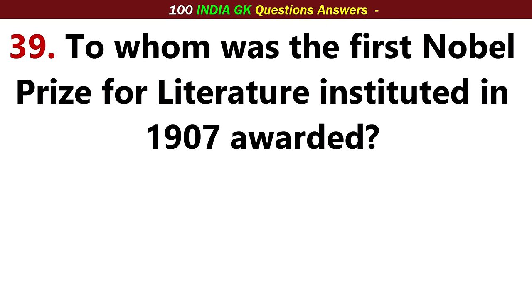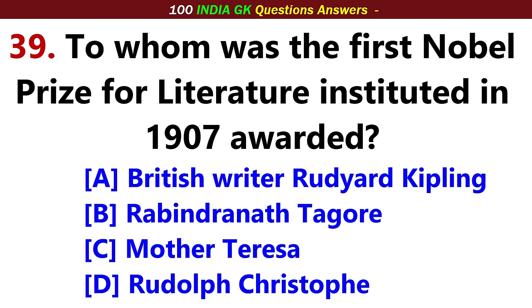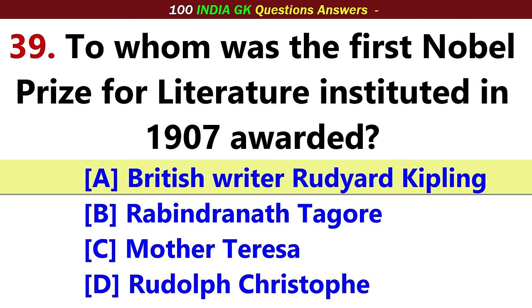To whom was the first Nobel Prize for Literature instituted in 1907 awarded? Answer, Option A: British writer Rudyard Kipling.